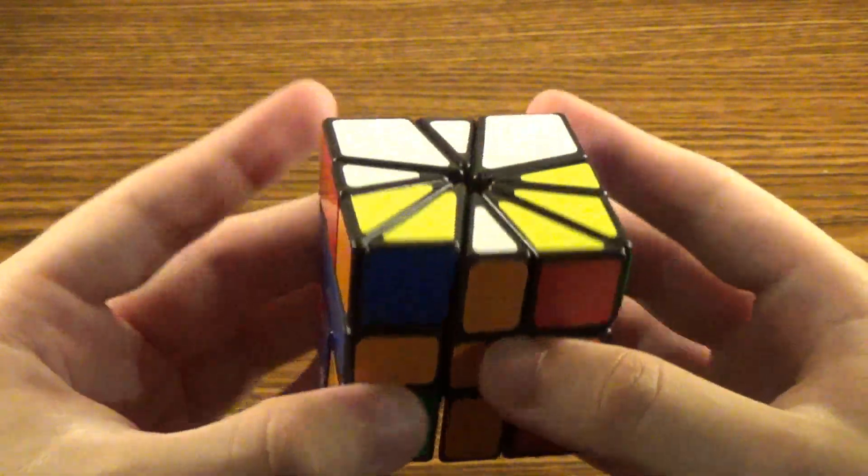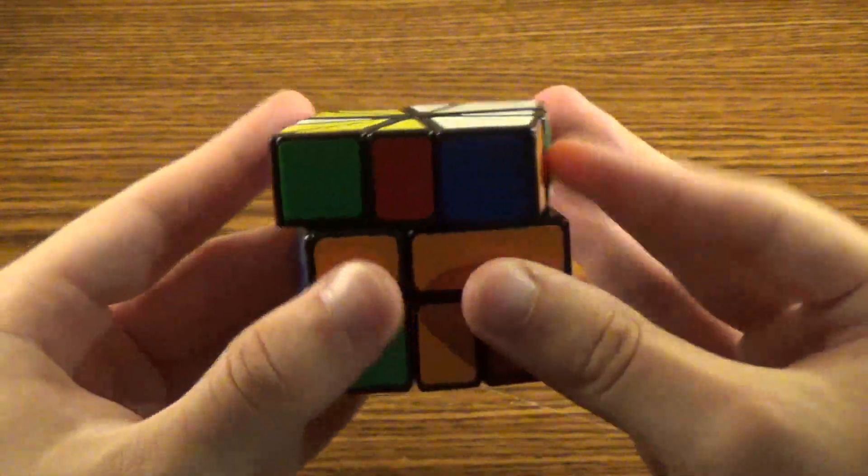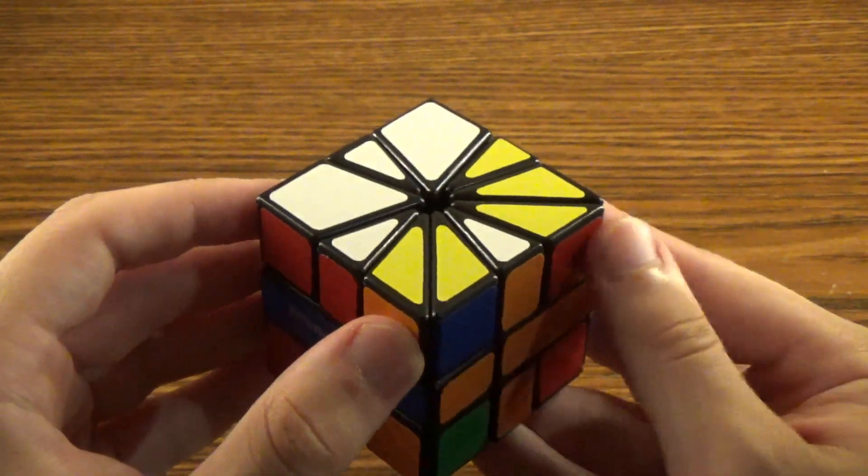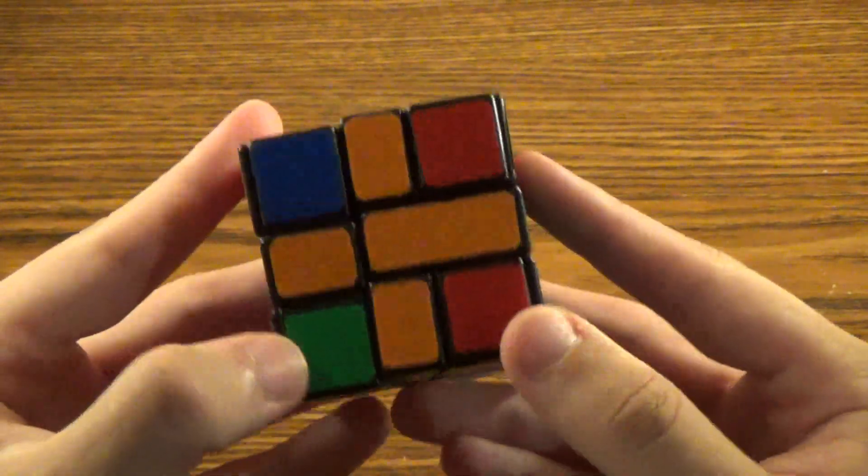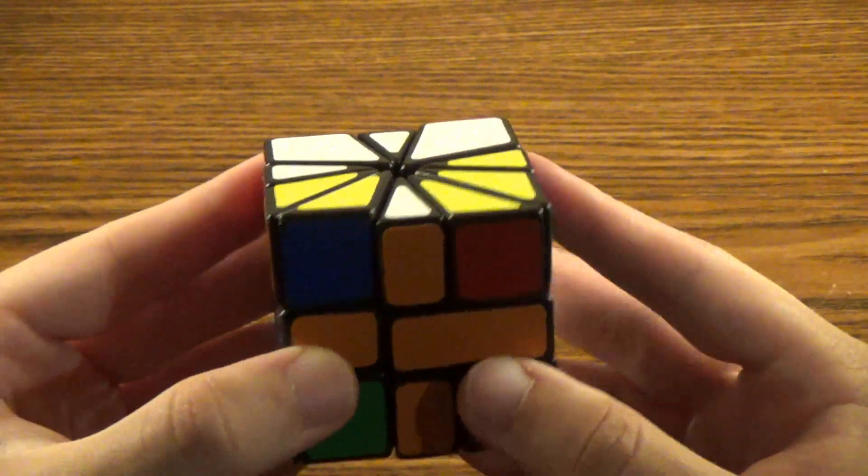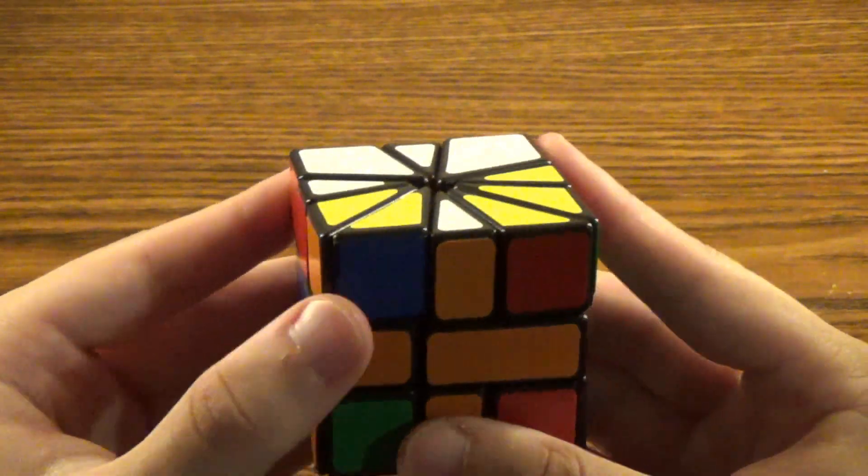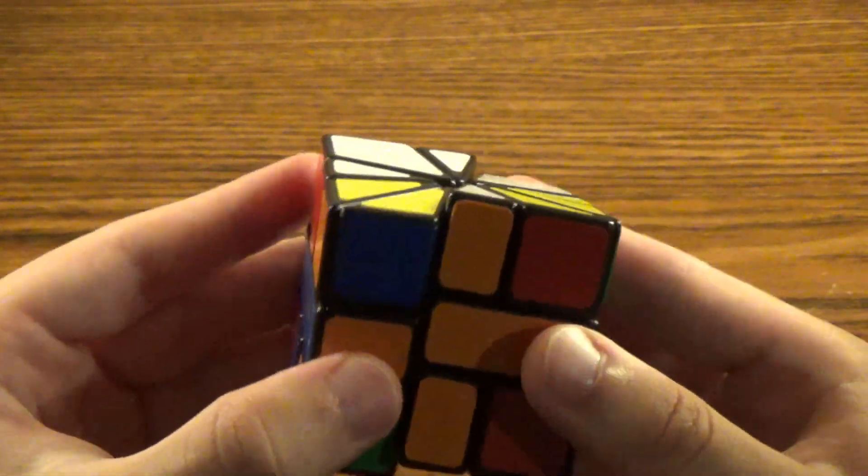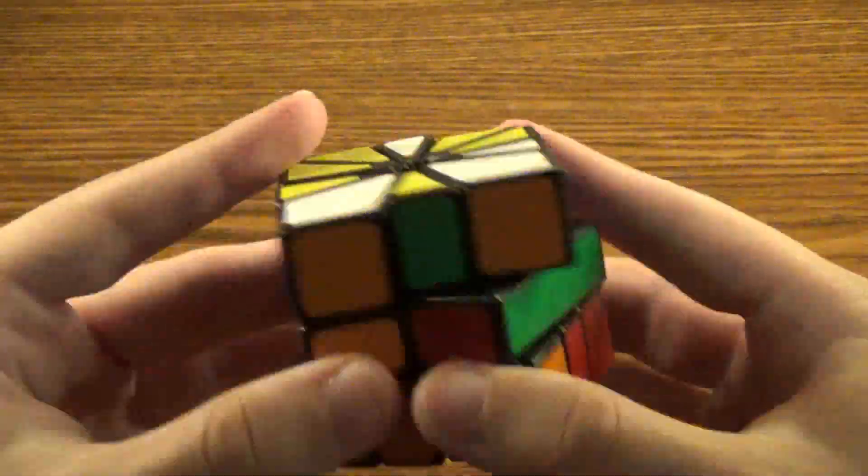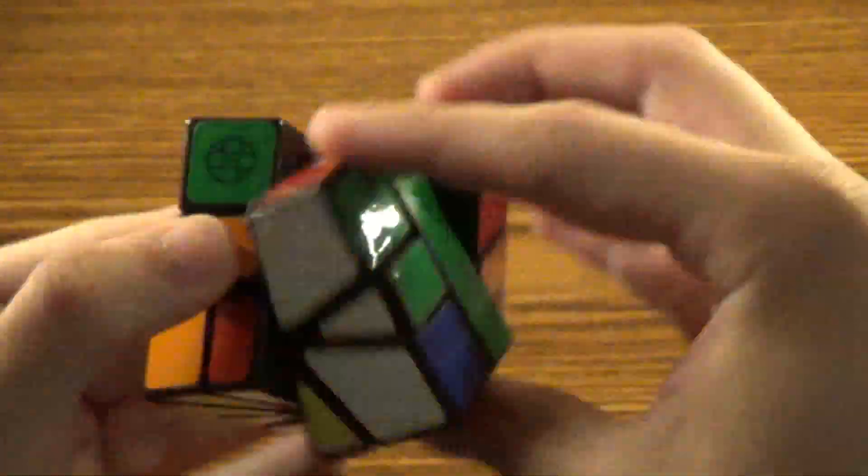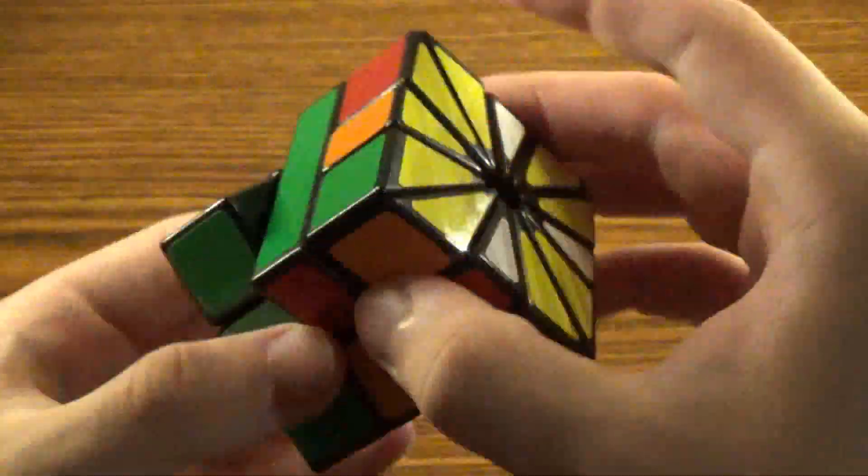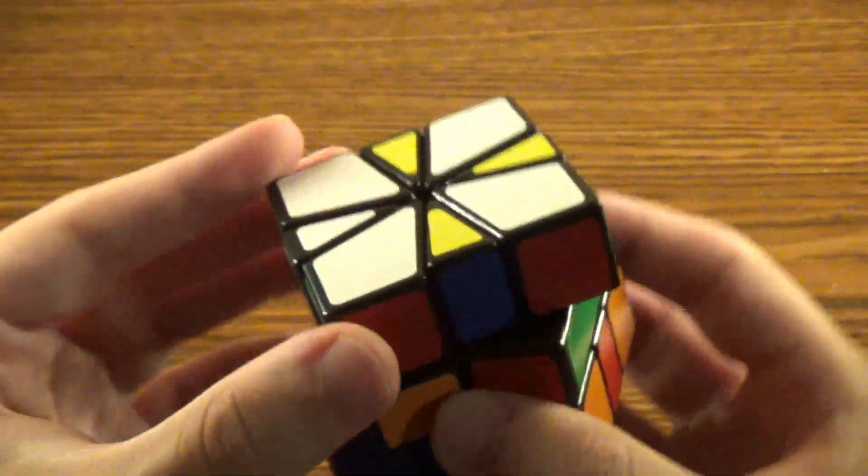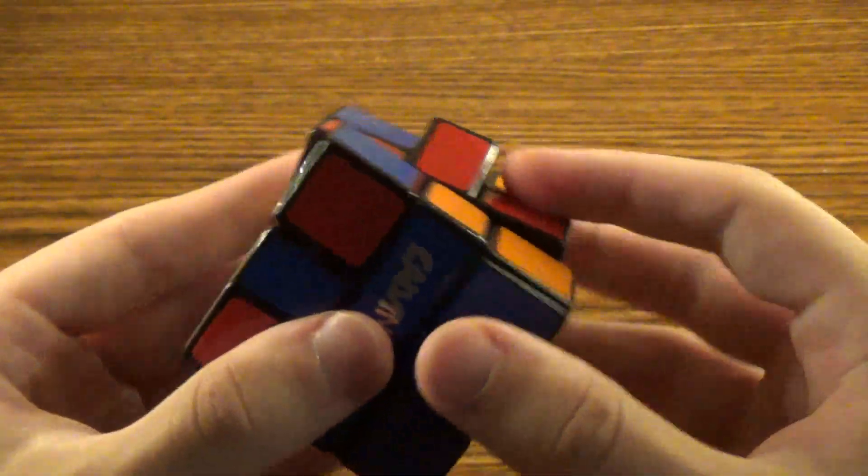But yeah, if these corners were to have been mismatched, then I would have needed to use that algorithm to kind of put them in place. Anyway, so now I'm just going to solve the corners like I would on a normal Square-1. And I will speed this up because my method is incredibly slow. And there we are, all of the corners have been solved.